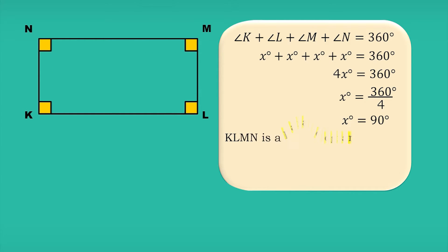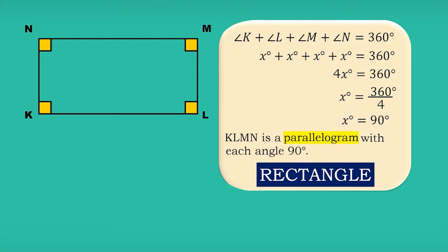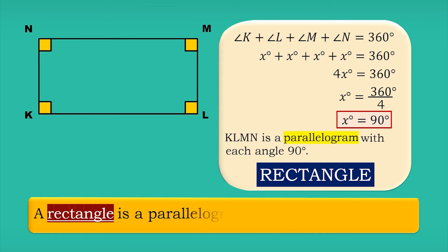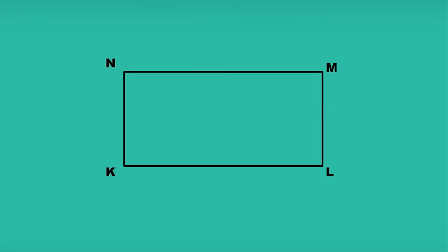That is, KLMN is a parallelogram with each angle equal to 90 degrees. These kinds of parallelograms are called rectangles. A rectangle is a parallelogram with each angle equal to 90 degrees, so a rectangle has all the properties of a parallelogram.